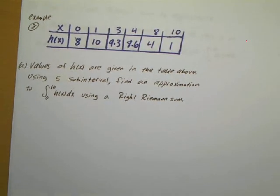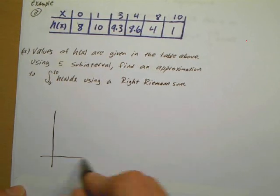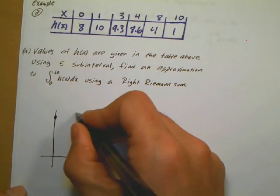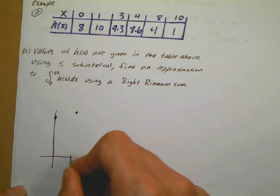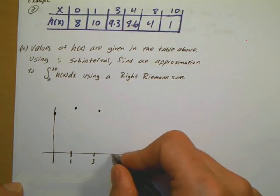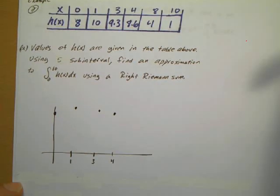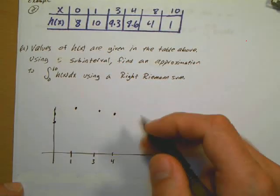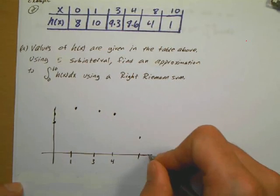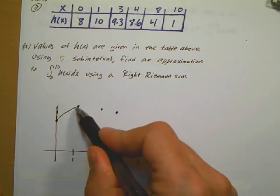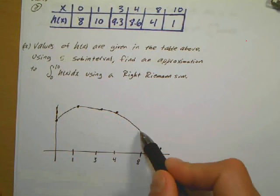There's another set of values to copy down. I want to use a right Riemann's Sum with five subintervals. First I'll sketch it. At x=0, f=8; at x=1, f=10; at x=3, f=9.3, somewhere in between; at x=4, it's around 8.6; and at x=8, f=4, which is about halfway down; and at x=10, f=1. So the graph kind of increases then decreases.